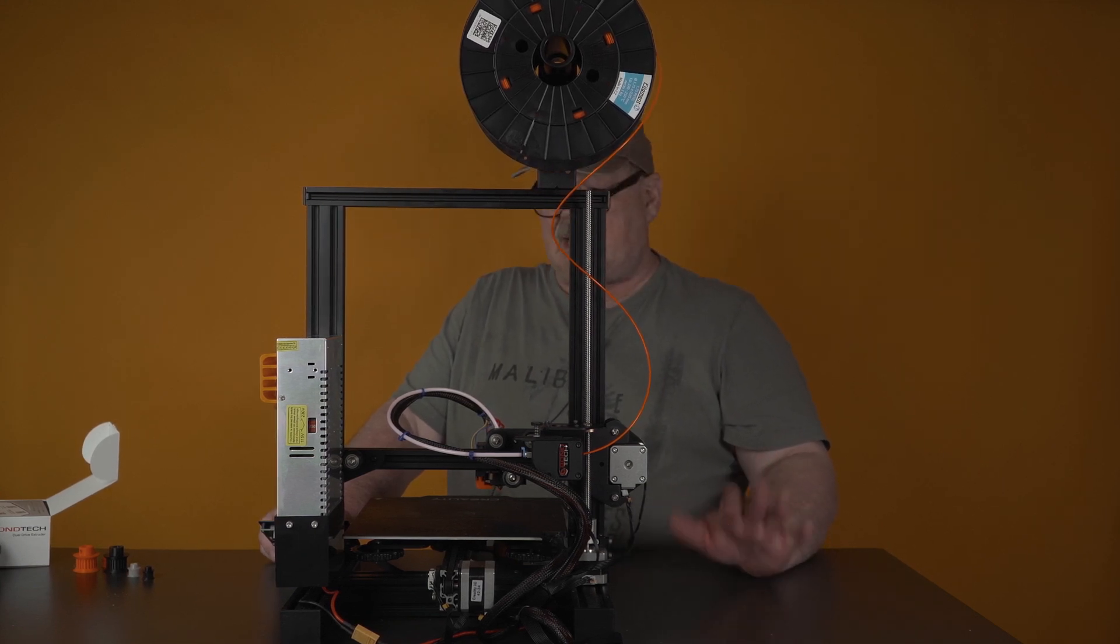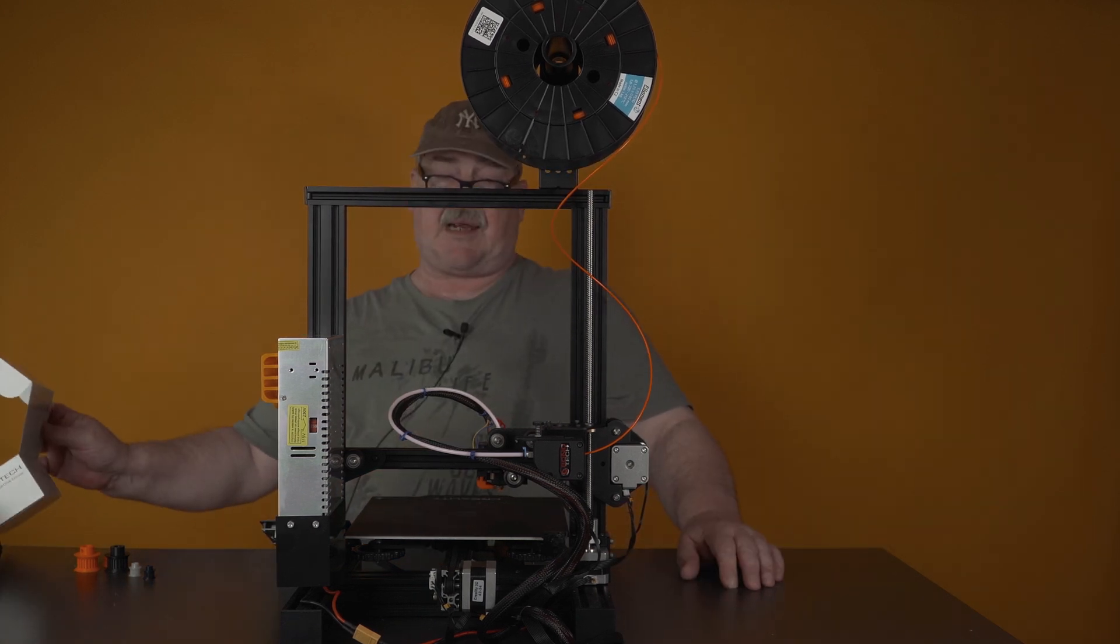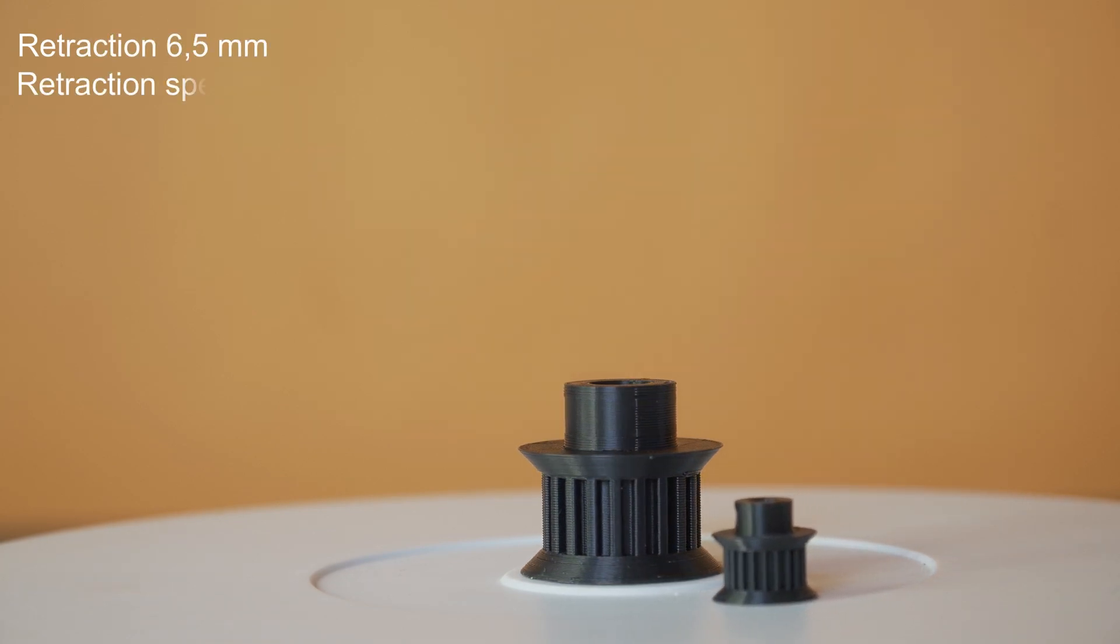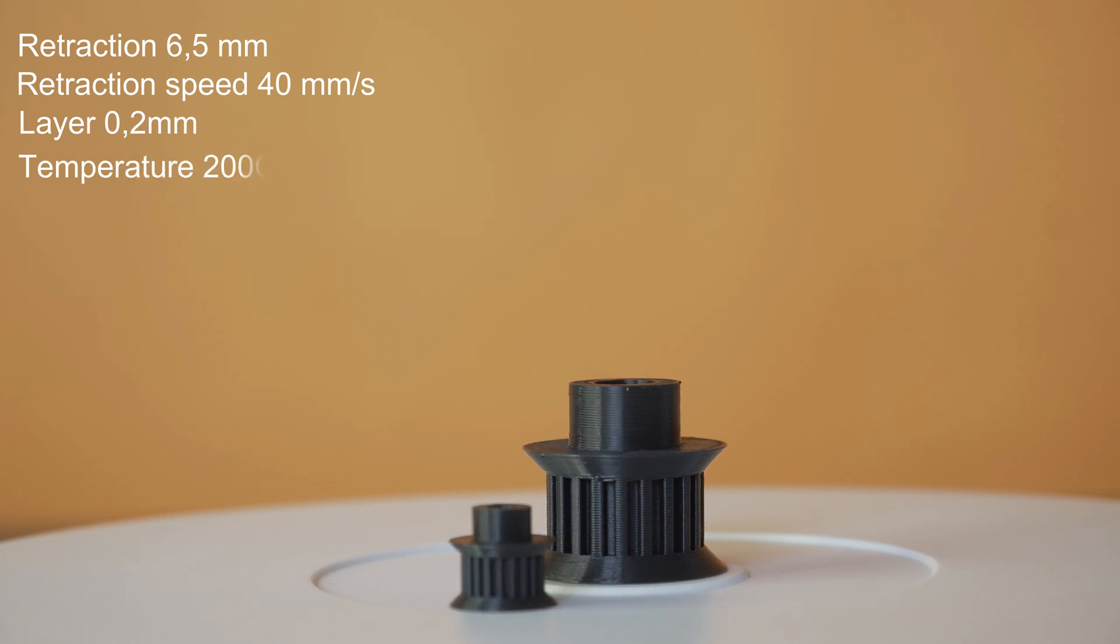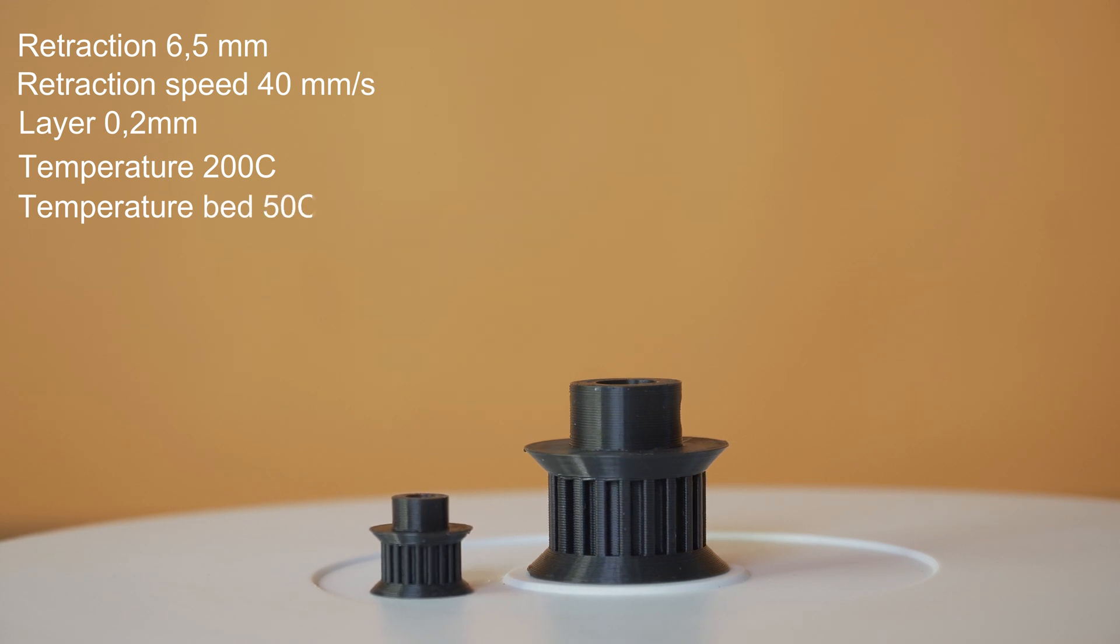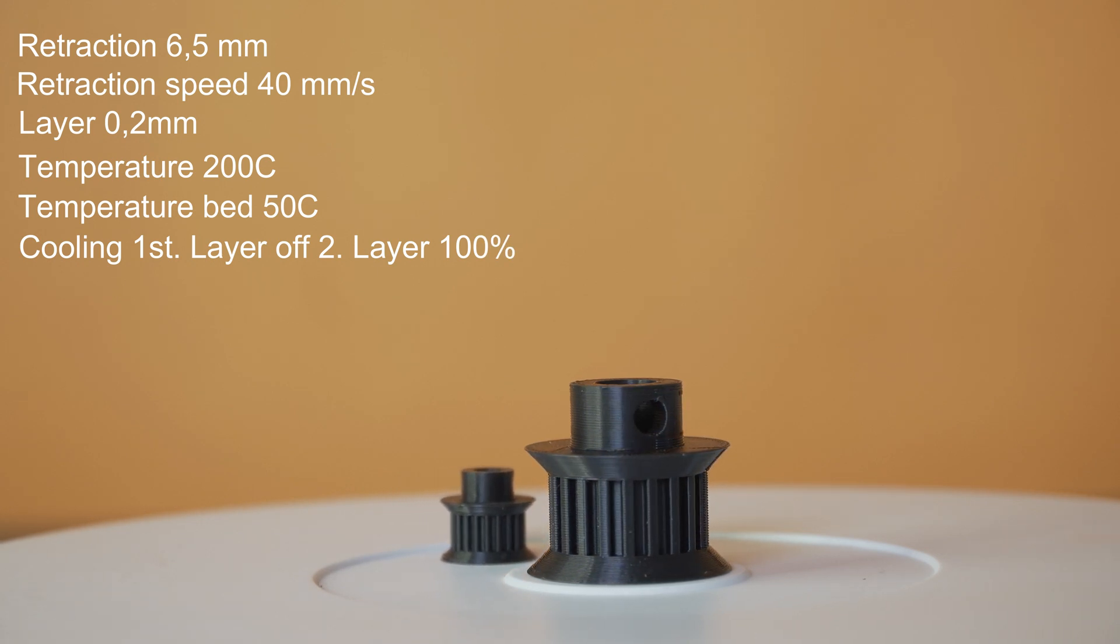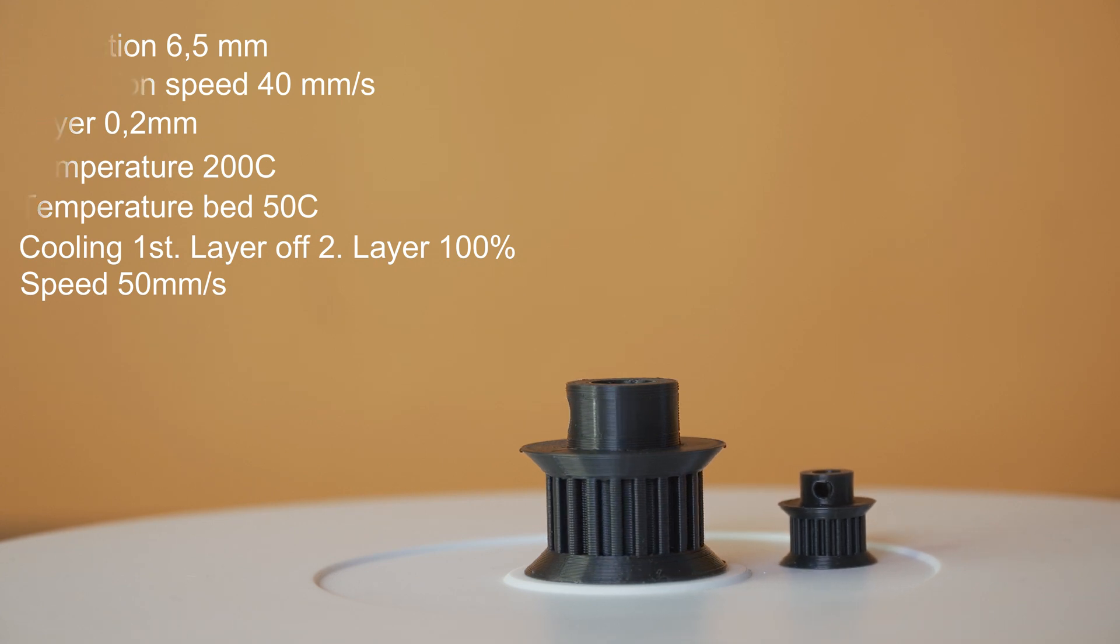Next we will go to the settings of the different filaments. And I will show you how I use this with my Bondtech extruder. So let's take a look on the specs. And the specs for the PLA is I use retraction 6.5 millimeter. Retraction speed I use 40 millimeters per second. The layer height on this print is 0.2 millimeters. And I print it at temperatures at 200 degrees and 50 degrees on temperature on the bed. Cooling at the first layer has I set to off. At the second layer it is 100%. Speed 50 millimeters per second.